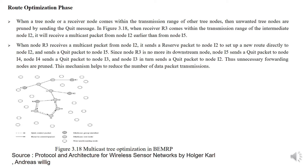Root optimization phase: when a tree node or a receiver node comes within the transmission range of other tree nodes, unwanted tree nodes are pruned by sending quit messages, as shown in figure 3.18. When receiver R3 comes within the transmission range of intermediate node i2, it will receive multicast packets from node i2 earlier than from node i5. When node R3 receives a multicast packet from node i2, it sends a reserve packet to node i2 to set up a new route directly to node i2, and sends a quit packet to node i5. Since node R3 is no longer the downstream node of i5, node i5 sends a quit packet to node i4, node i4 sends a quit packet to node i3, and node i3 sends a quit packet to node i2. Thus unnecessary forwarding nodes are pruned, helping to reduce the number of data packet transmissions.